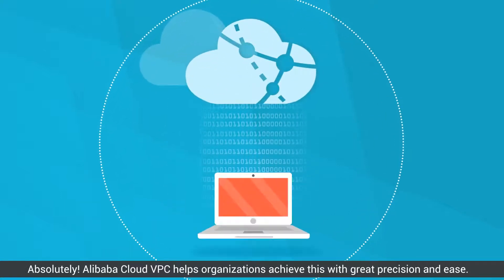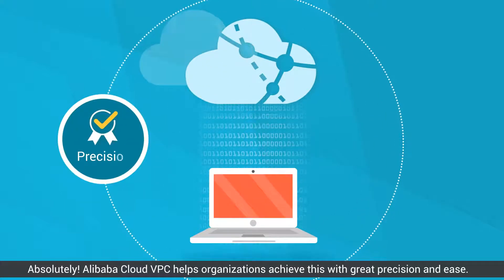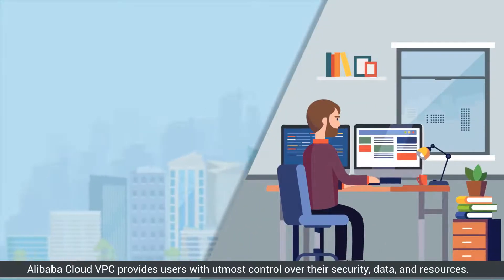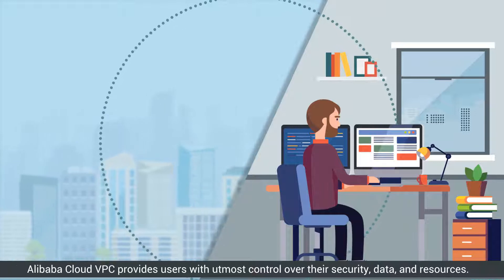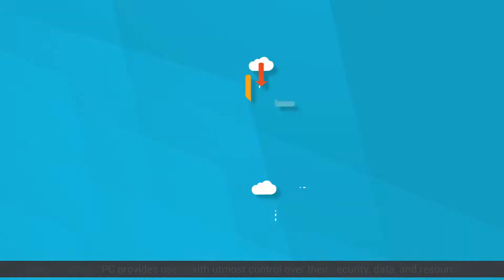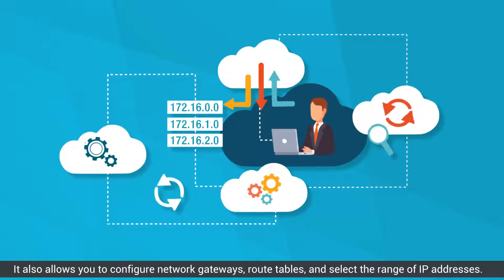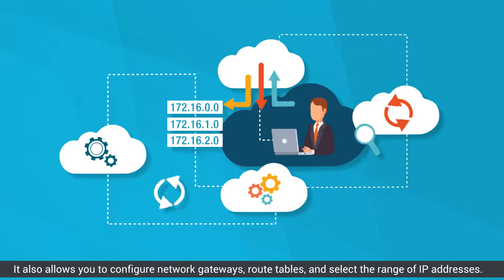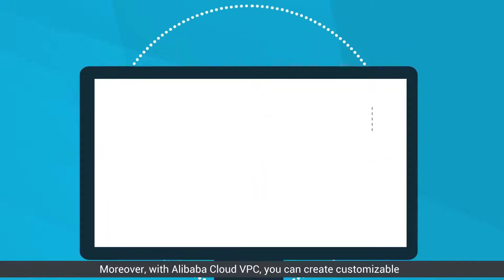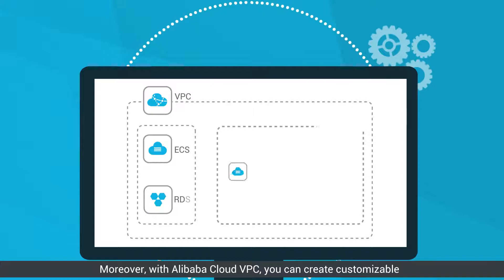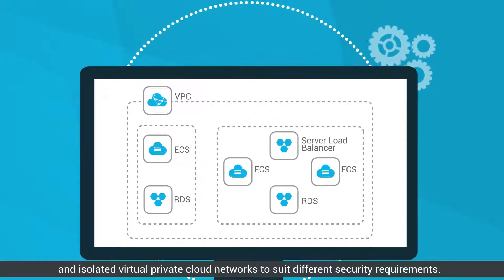Alibaba Cloud VPC helps organizations achieve this with great precision and ease. Alibaba Cloud VPC provides users with utmost control over their security, data, and resources. It also allows you to configure network gateways and route tables, and select the range of IP addresses.